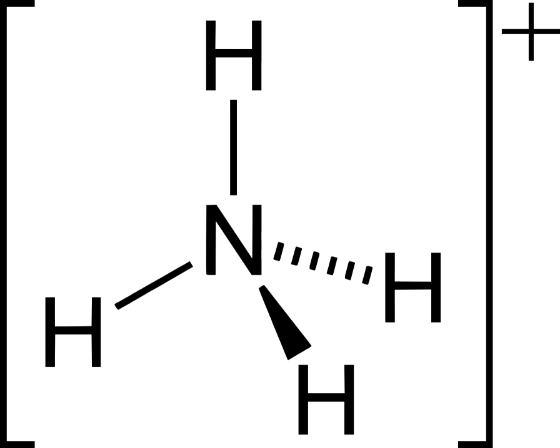The ion has a tetrahedral structure and is isoelectronic with methane and borohydride. In terms of size, the ammonium cation resembles the caesium cation.